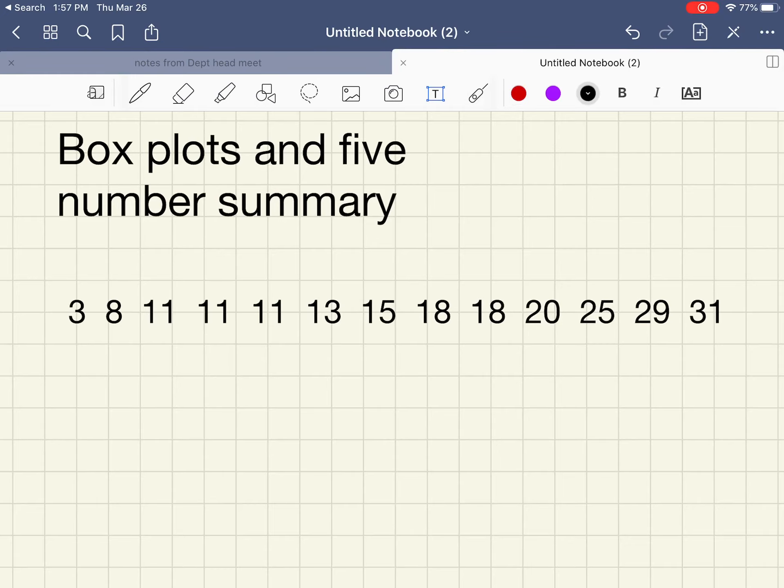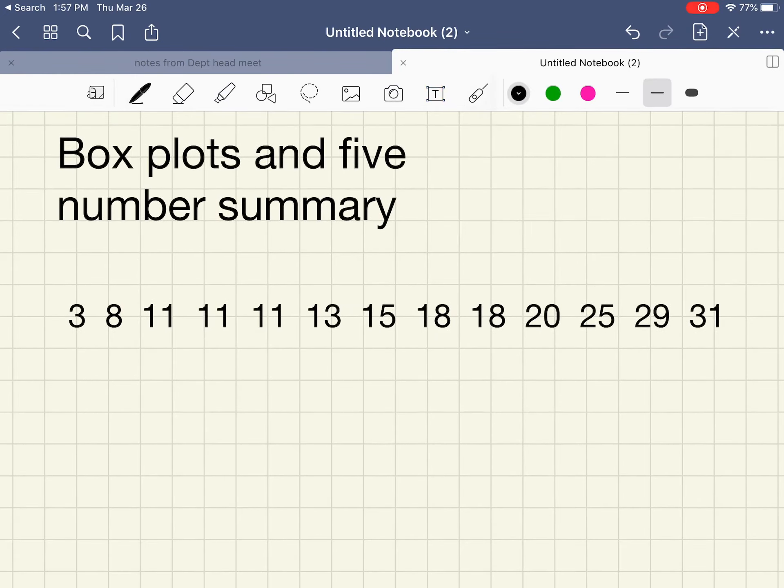The first thing we're going to find is the median. The median of a data set is the middle number. There are 13 values, so it's going to be the seventh number in from either end. 1, 2, 3, 4, 5, 6, 7 this way—1, 2, 3, 4, 5, 6—15 is the median. It's also known as Q2.